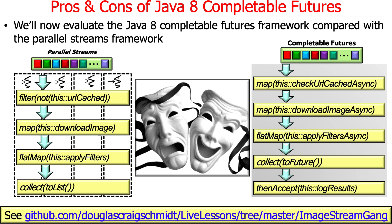The completable futures version is a little bit longer, but you can see the parallels: we asynchronously check if they're cached, we asynchronously download non-cached images, we asynchronously filter and store images that have completed downloading, we collect the results to a future, and then we wait for the results and log them. It's more or less the same thing, although the implementation is quite a bit different and more complex.